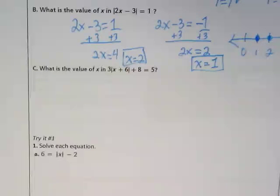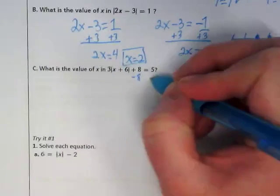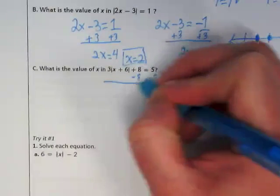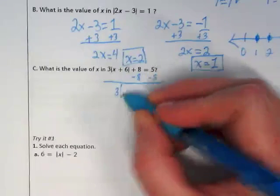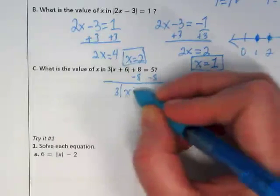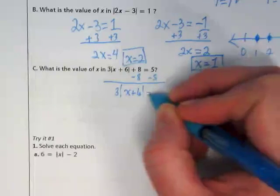So let's start with the 8, and we're going to use inverse operations to get rid of it. And so we're going to start by subtracting 8 from both sides. We're left with absolute value being multiplied by 3, x plus 6 is equal to negative 3.